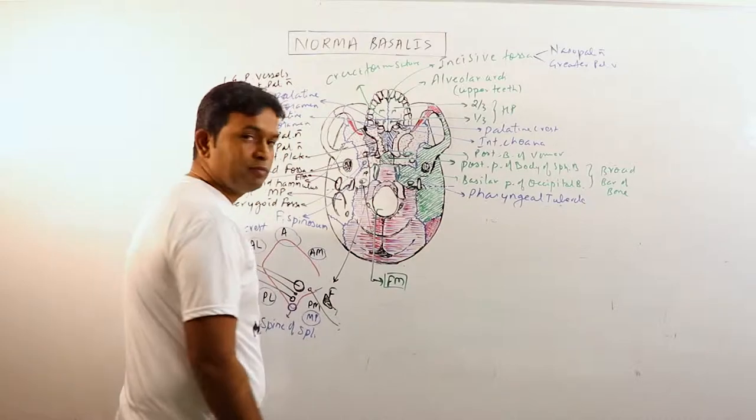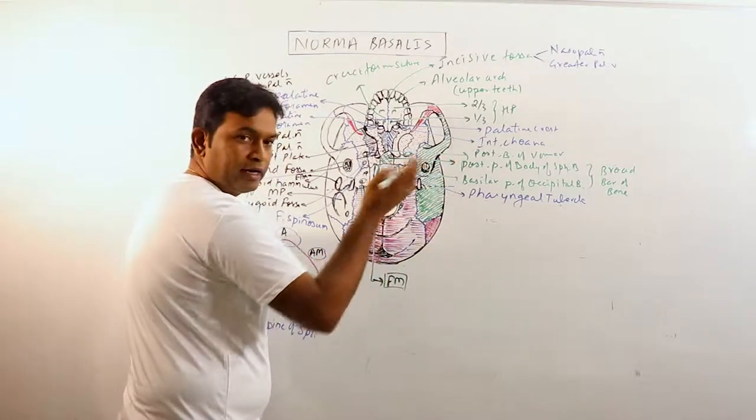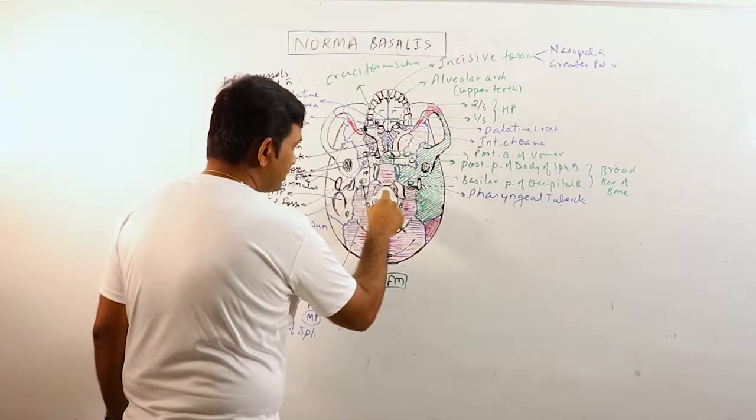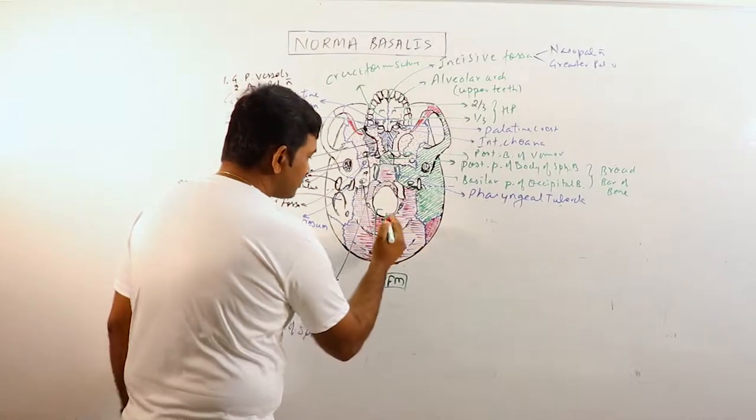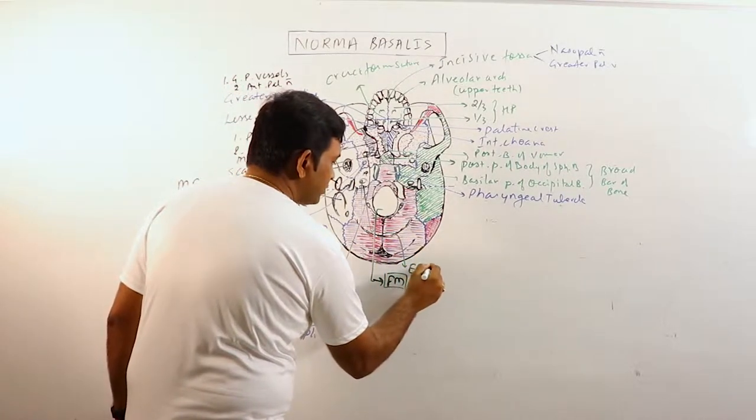We know that foramen magnum is the largest foramen of the skull. It opens upwardly into the posterior cranial fossa and downwardly into the vertebral canal. It is brought posteriorly. This is external occipital crest.